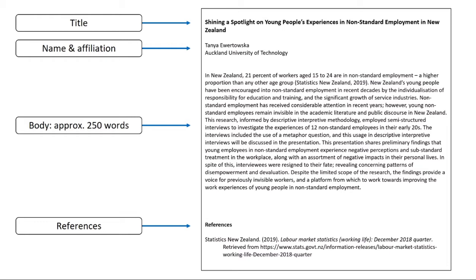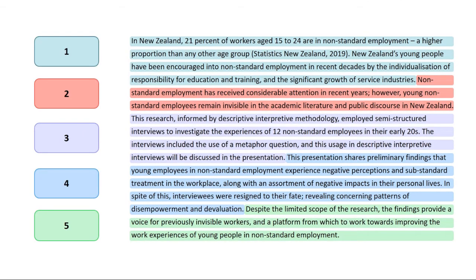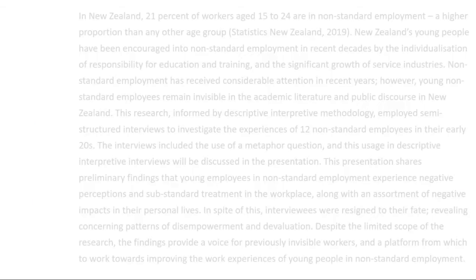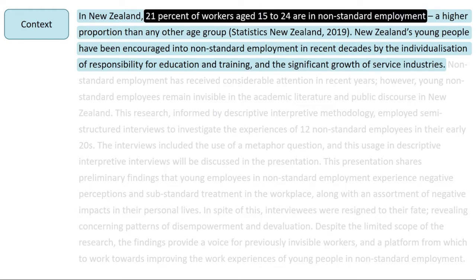The body of a conference abstract typically has five parts. This social sciences abstract describes a research presentation about young people's experiences in non-standard employment in New Zealand. The first part of an abstract is the context, which explains the background to the research, including the research problem. Here, the context is that a large proportion of young workers are in non-standard employment.